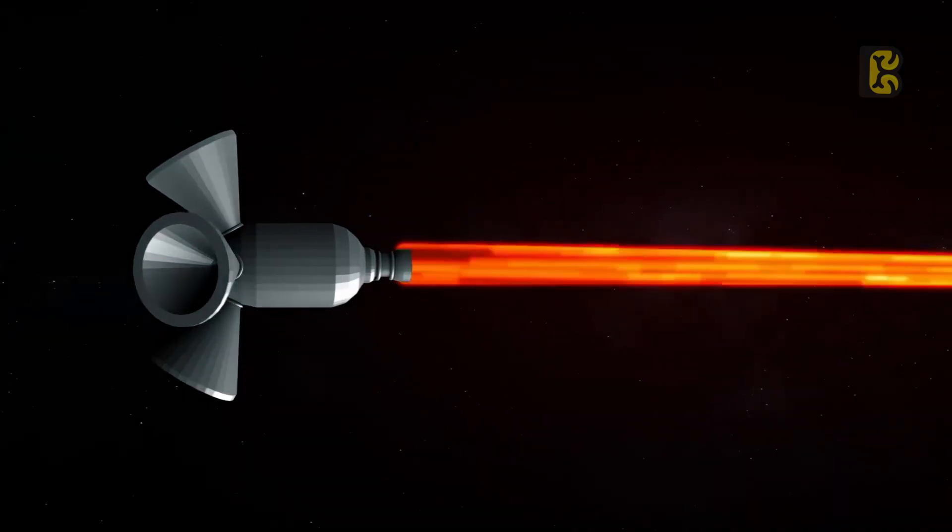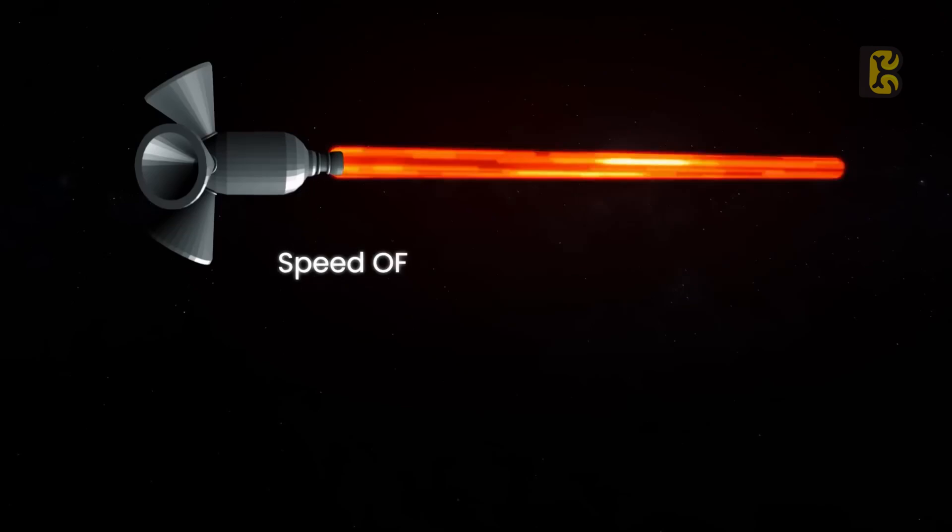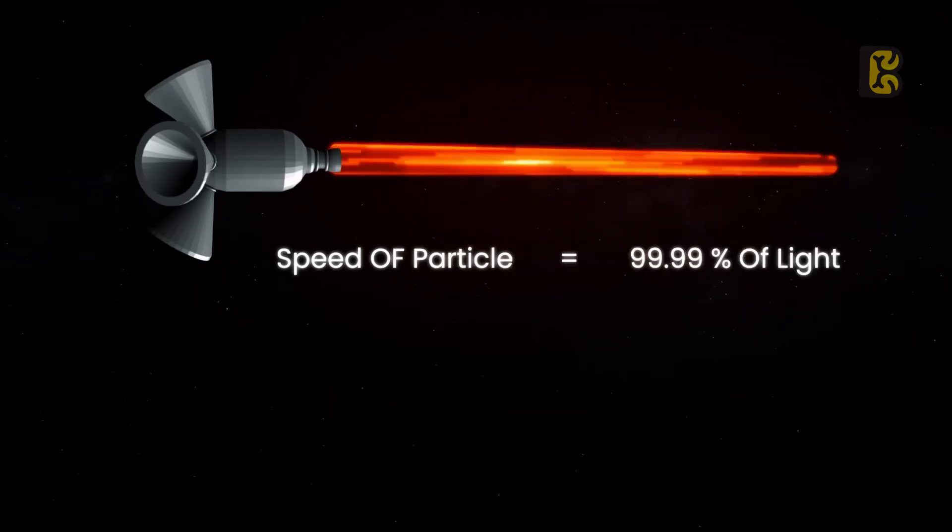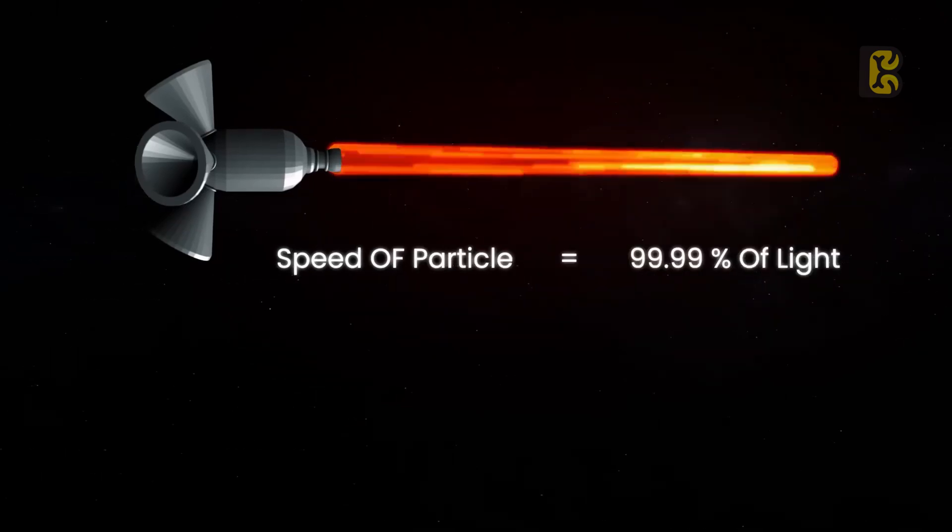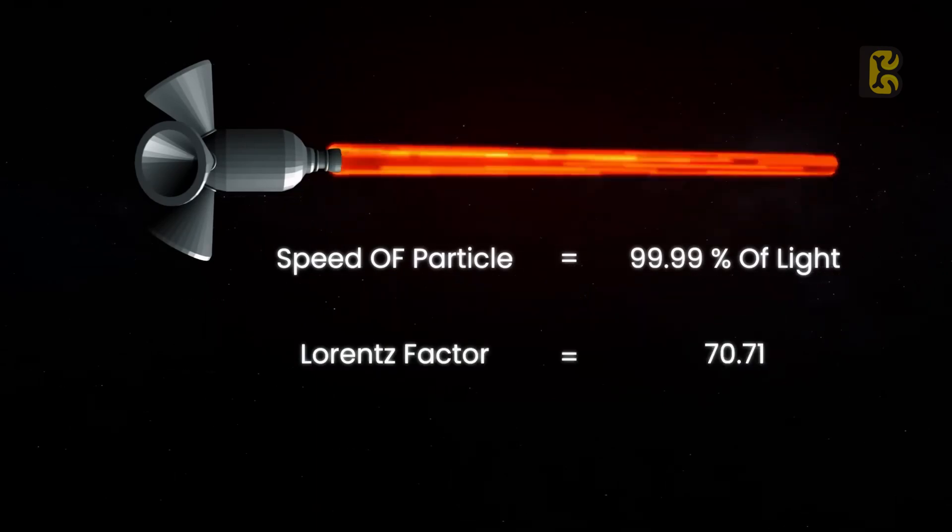But we can't even use the value of a normal proton here because, according to the Lorentz factor, the mass of a particle also increases with relativistic mass as its speed approaches that of light. Now, if we assume the speed of the particle to be 99.99% of the speed of light, its Lorentz factor comes out to be 7.71.